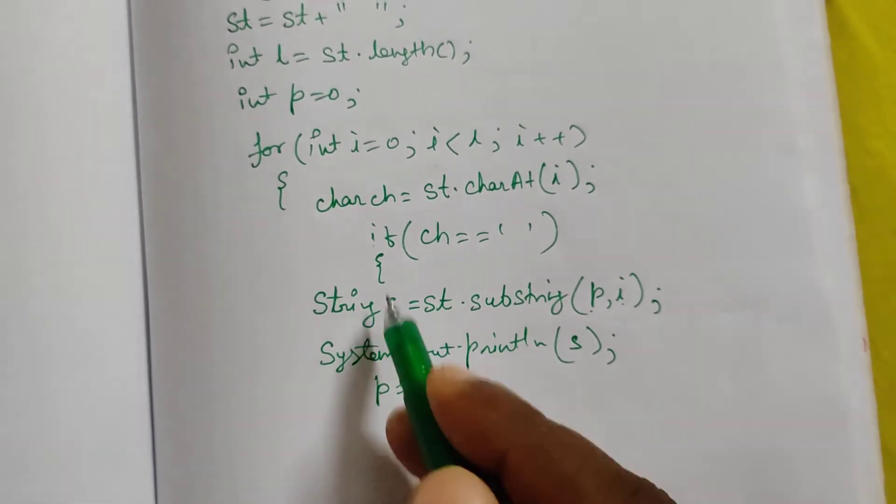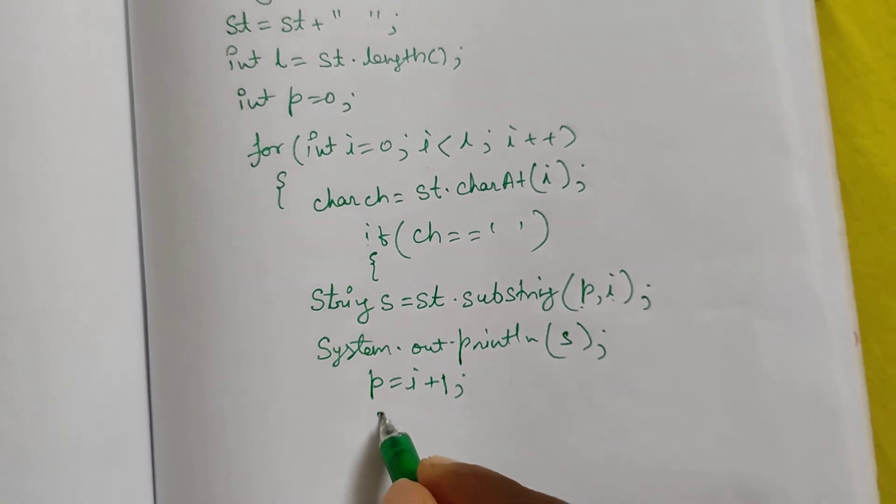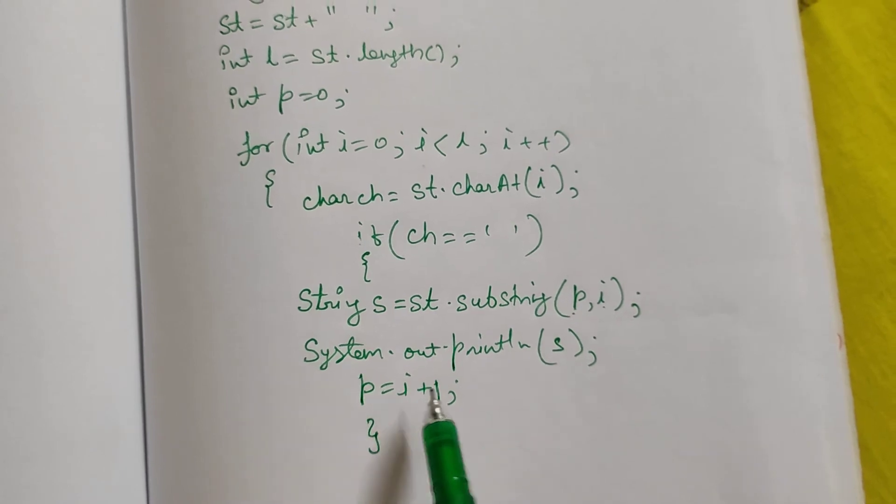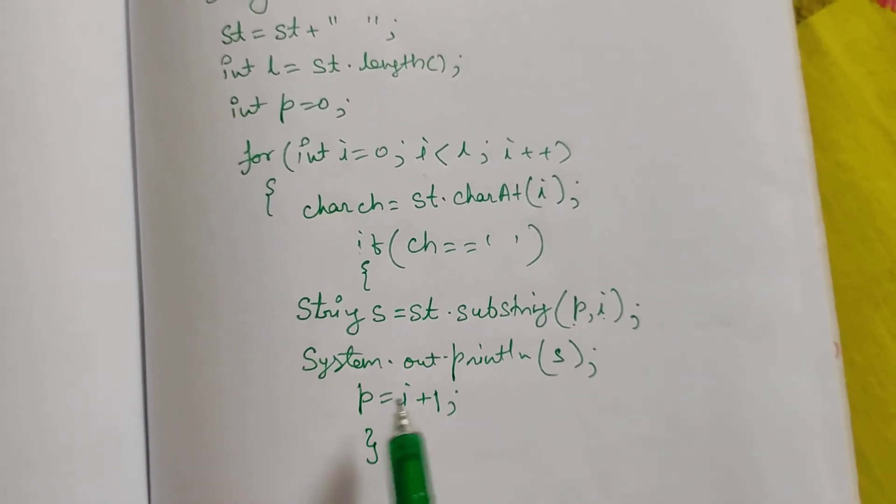So this is important. You have to keep this one inside if bracket. If you keep this outside if bracket, it will not work. So inside if bracket, you have to write p = i + 1. That position we have changed now.